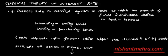In the classical theory of interest rate, equilibrium is determined by lenders and borrowers. The rate at which the amount of funds individuals desire to lend is equal to the amount individuals desire to borrow — that rate is the equilibrium interest rate.